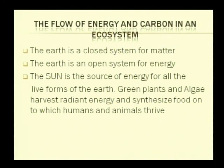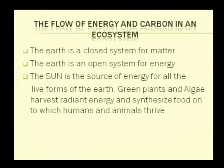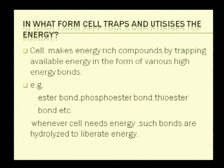Regarding the flow of energy and carbon in the ecosystem, the sun is the ultimate source of energy for everyone. The earth can be considered an open source of energy. Radiant energy is harvested by green plants and algae, and humans, animals, and other microorganisms are largely dependent upon this harvested form of energy obtained from green plants. In what form does a cell trap and utilize energy?